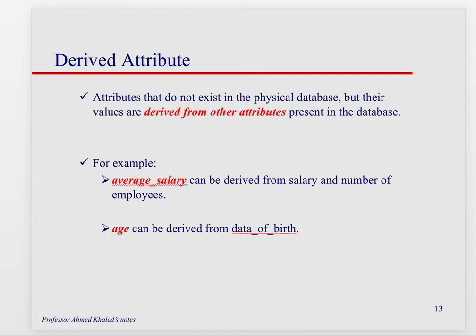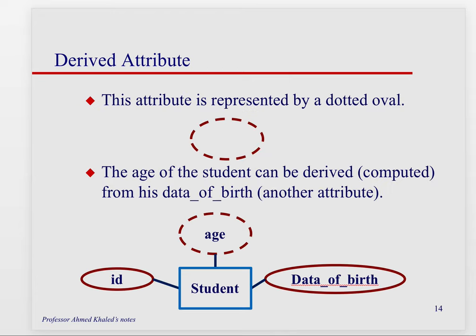Age changes over time, so it's not something you can store as a fixed value. The next year it will be different, but you do have date of birth, and age can be computed from it. To depict a derived attribute, you use the dotted oval. If it's something that's derived or computed from something else rather than directly stored, you put it in this dotted oval.